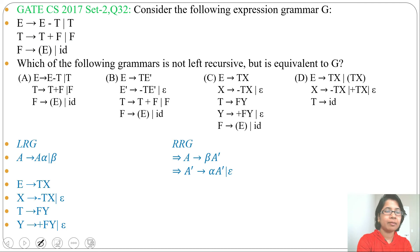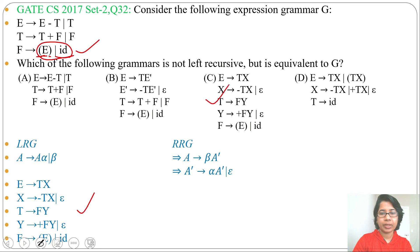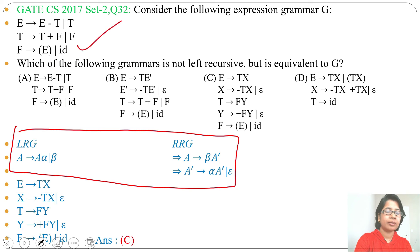The next production: F derives open bracket E close bracket or id. This is not left recursive, as F is not present on the right-hand side. So write directly: F derives open bracket E close bracket or id. Now check which option is similar to this — it is option C. So the answer is option C. If you know how to convert left recursive grammar to right recursive grammar, this formula can easily solve this question.